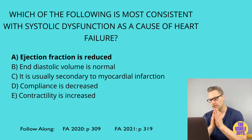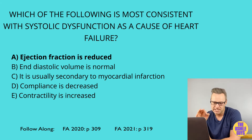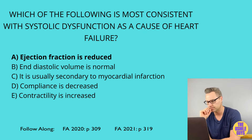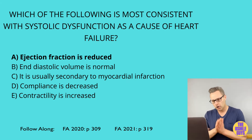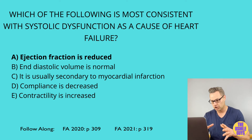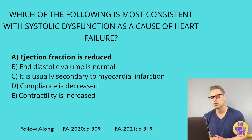If the failure is caused by systolic dysfunction, it is oftentimes secondary to ischemia, MI, or dilated cardiomyopathy. As a result of systolic dysfunction, you're going to see some specific changes in physiology. If you've got systolic dysfunction, ejection fraction drops — so you'll see a decrease in ejection fraction. This also means end-diastolic volume will be increased. Now, if heart failure is precipitated by diastolic dysfunction, it means the heart can't perform the necessary job during the diastolic phase. Compliance of the heart is decreased, which leads to an increase in end-diastolic pressure. However, ejection fraction here is preserved.